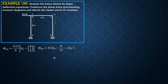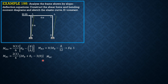Next we have MBC. MBC equals 2EI over L times the quantity (2 theta_B plus theta_C minus 3 times 0), since the beam remains horizontal and there is no load. Simplifying, MBC equals theta_B plus 0.5 theta_C. Note that we use 2EI over L because we expect moments at both B and C.